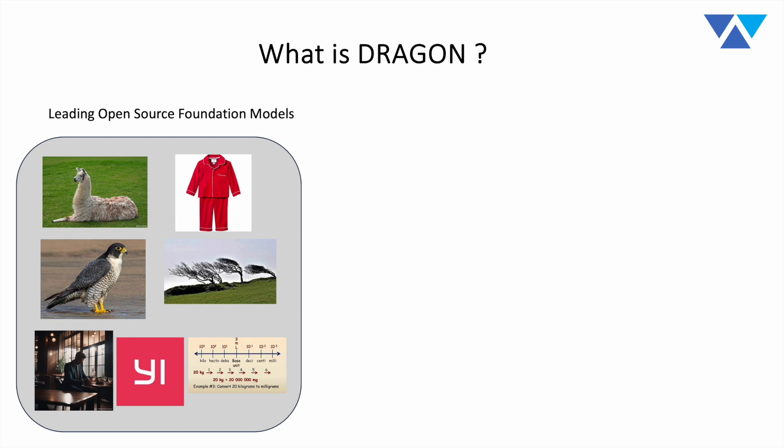The trees bending in the image is actually a Mistral — a strong wind. And on the bottom, interestingly, we asked Stable Diffusion what a Stable AI genius looks like, and it produced that pensive-looking gentleman in the restaurant at the bottom left. There's also Yi, a fantastic new model series from 01AI.